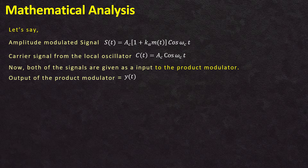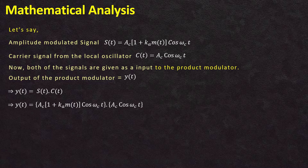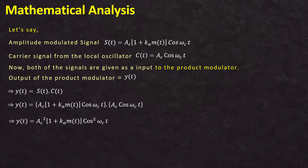The output of the product modulator is y(t), which is the result of multiplication of the amplitude modulated signal s(t) and the carrier signal c(t). So y(t) = s(t)·c(t). Substituting s(t) = Ac·(1 + ka·m(t))·cos(ωc·t) and c(t) = Ac·cos(ωc·t), we get y(t) = Ac·(1 + ka·m(t))·cos(ωc·t) × Ac·cos(ωc·t), which simplifies to y(t) = Ac² × (1 + ka·m(t)) × cos²(ωc·t).